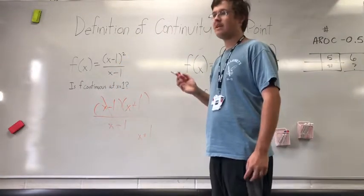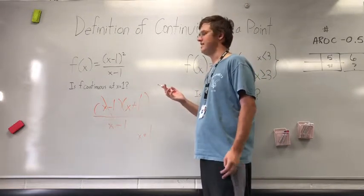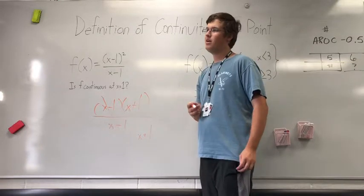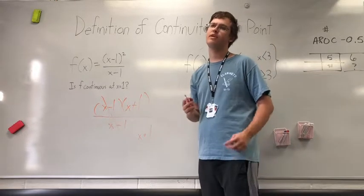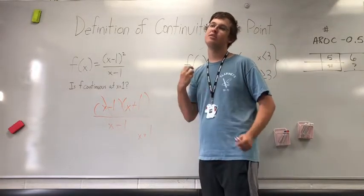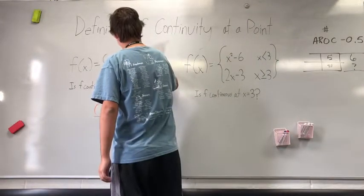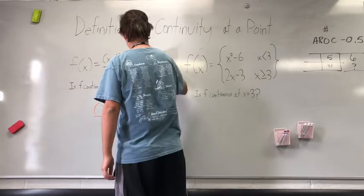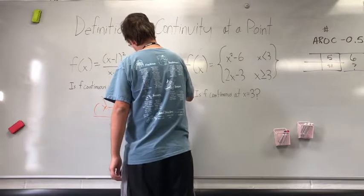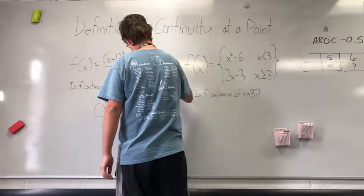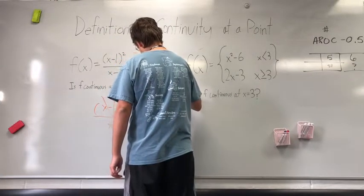By canceling out that x minus 1, we have created a hole whenever x equals 1. Because there is a hole there, there is no actual point where the function is defined at x equals 1. There is no defined point, and even though the limit does exist, that second requirement is not met. Therefore, we can say that f is not continuous at x equals 1 because f of 1 does not exist.